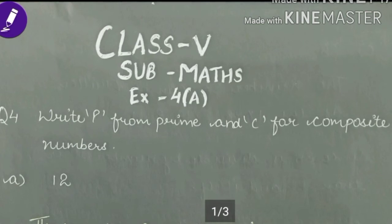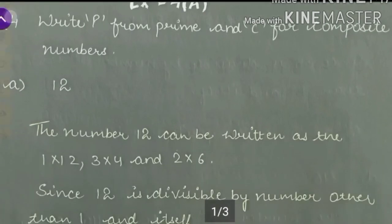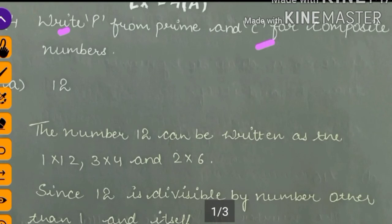Now we see question number 4: Write P for prime and C for composite.